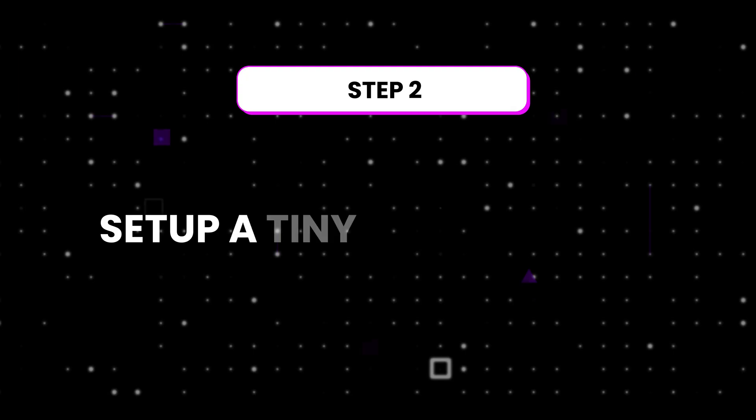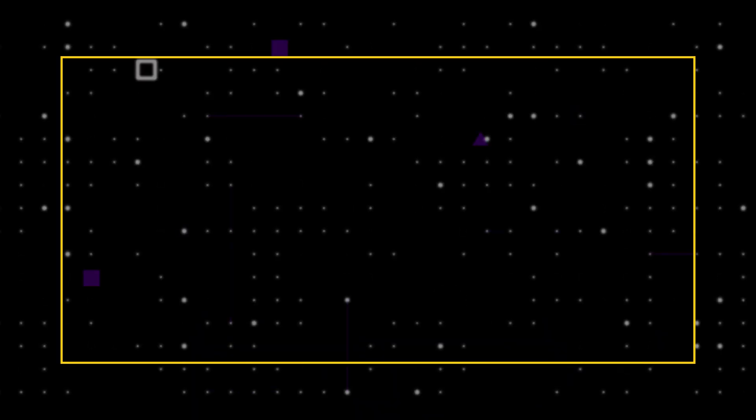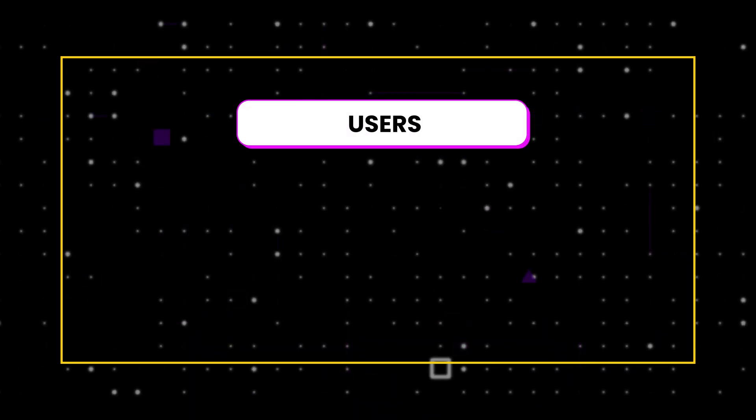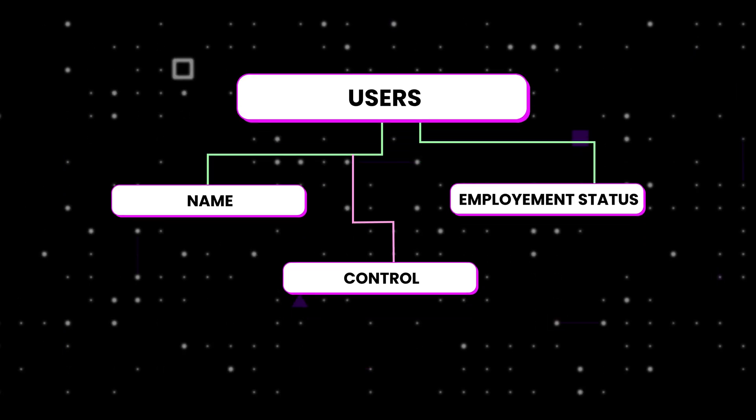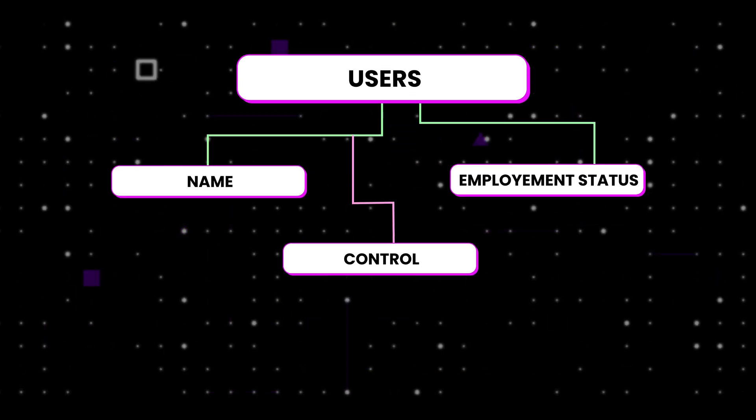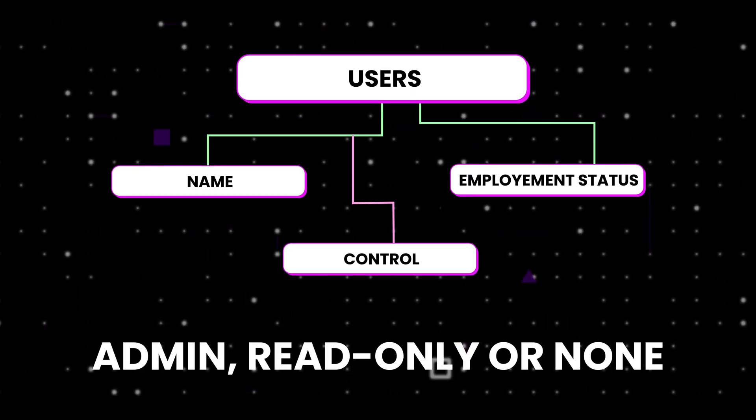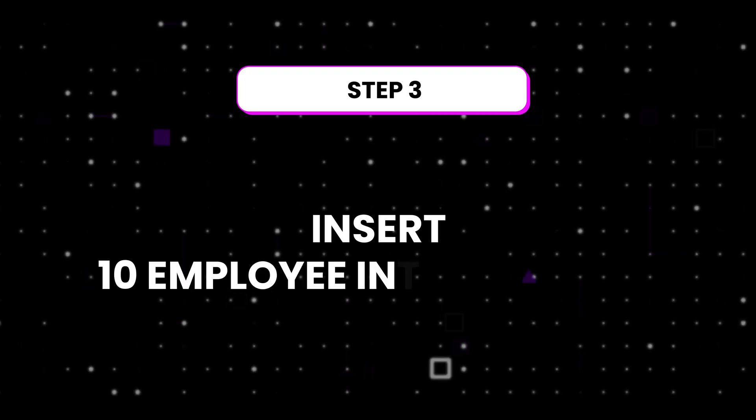Step two: set up a tiny SQL database. SQLite is perfect for this because you don't even need a server — it's just a file on your machine. Create a table called Users with columns like name, current role, employment status (active or terminated), and permissions level (admin, read-only, or none). Step three: insert about 10 fictitious employees into the table. Make sure to include interesting use cases, like someone who switched from engineering to marketing but still has admin rights, and someone who is marked as terminated but still shows access.